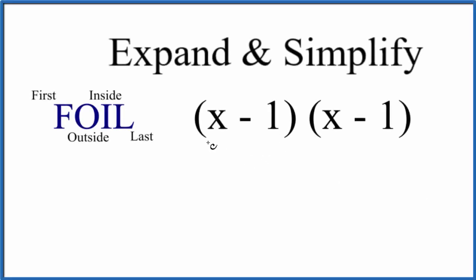Let's expand and simplify (x - 1)(x - 1). We'll use the distributive property to do that, and a good way to remember that is the FOIL method.